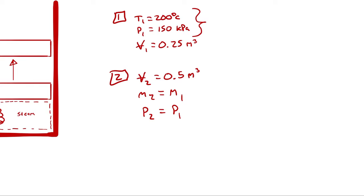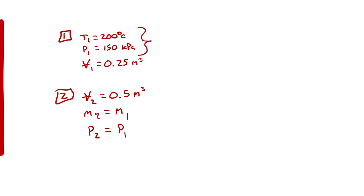The two independent intensive properties which fully define state 2 are pressure and specific volume. We don't know the specific volume at state 2 directly, but we have enough information to describe it: we can look up specific volume 1 at state 1, use it to calculate mass at state 1 (which equals mass at state 2), then use the volume and mass at state 2 to calculate specific volume at state 2. Then we use pressure and specific volume at state 2 to determine whatever we want.